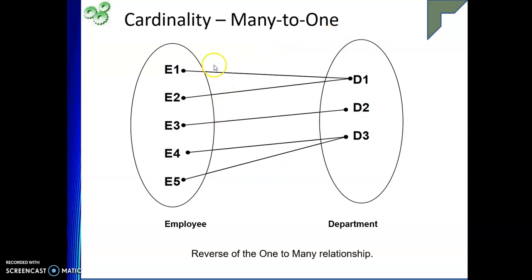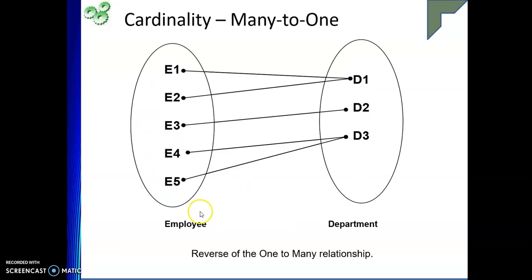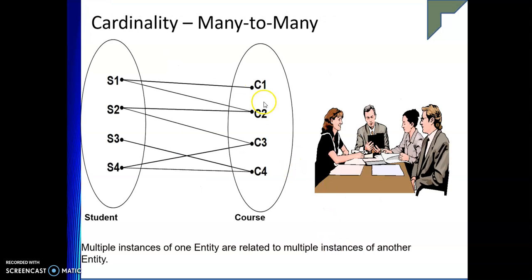Many-to-one is simply the reverse of one-to-many. Consider employee and department: many employees work in a particular department, and one department has many employees. This type of relationship is called many-to-one — many employees working in only one department. It is the reverse of the one-to-many relationship.